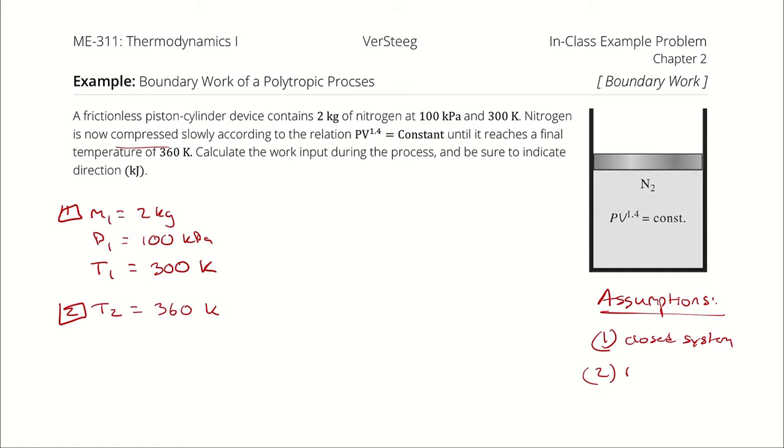Furthermore, I'm going to assume that the nitrogen is ideal. If it's ideal, then I can describe its behavior with the ideal gas law. The last thing we know is that the relation pressure times volume to the 1.4 is constant describes a polytropic process with an n value of 1.4.